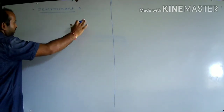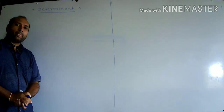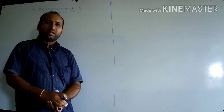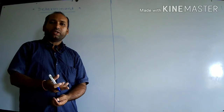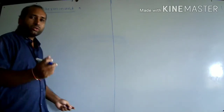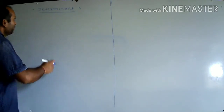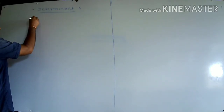Generally, determinants are denoted by capital letters like D, A, B, C, etc. See the example.